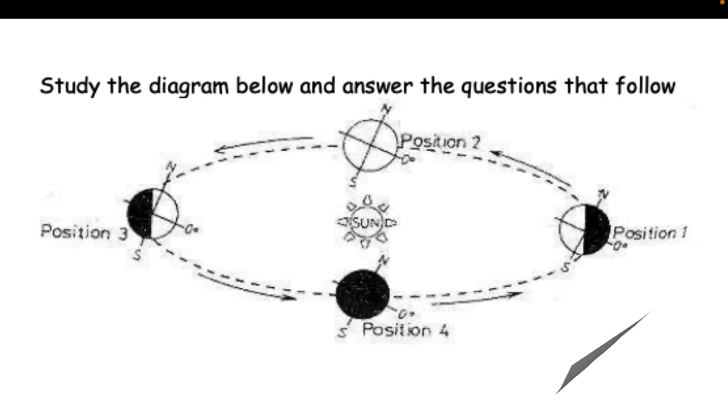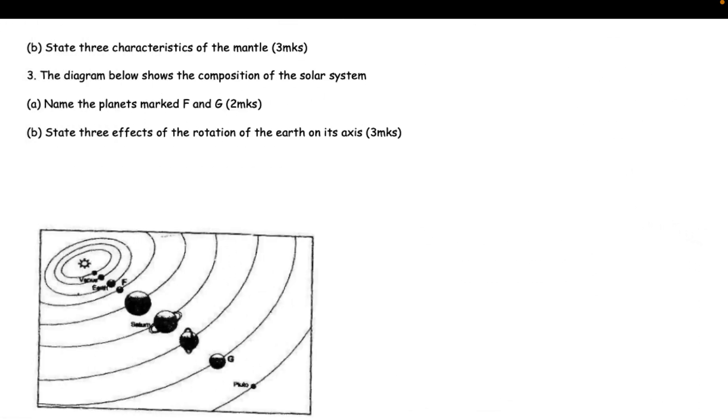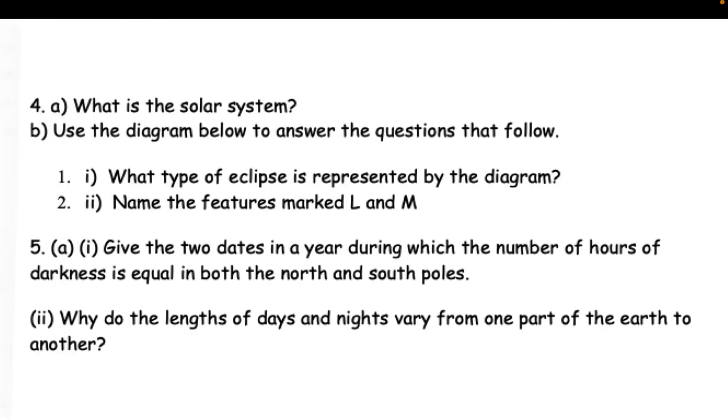(b) State 3 characteristics of the mantle (3mks). 3. The diagram below shows the composition of the solar system. (a) Name the planets marked F and G (2mks). (b) State 3 effects of the rotation of the earth on its axis (3mks).